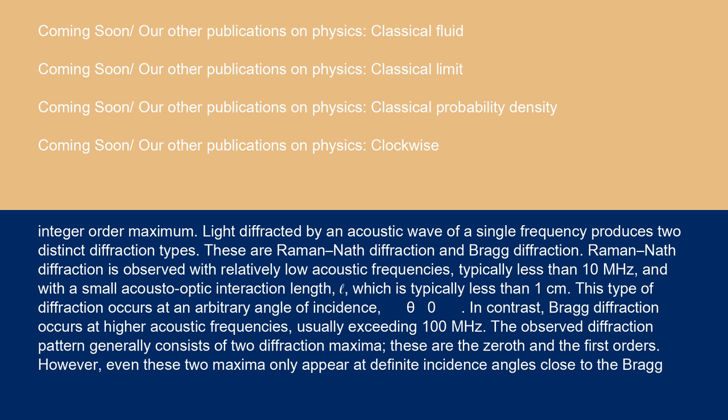Light diffracted by an acoustic wave of a single frequency produces two distinct diffraction types. These are Raman-Nath diffraction and Bragg diffraction. Raman-Nath diffraction is observed with relatively low acoustic frequencies, typically less than 10 MHz, and with a small acousto-optic interaction length, which is typically less than 1 cm. This type of diffraction occurs at an arbitrary angle of incidence, θ0.